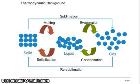Thermodynamic Background. You know solid, liquid, gas. Solid is converted to liquid by melting. Liquid is converted to gas by evaporation. Gas condensation forms liquid. Liquid solidification forms solid. Solid sublimation gives gas, and gas resublimation gives solid. This is the thermodynamic background of the Rotary Evaporator.